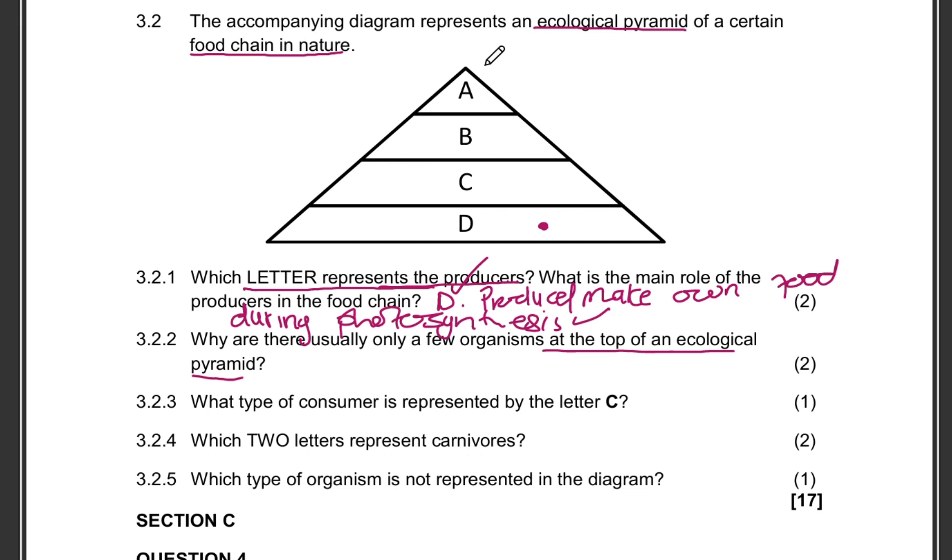In order for you to get the two marks, you would need to say the organisms in each level use most of the energy, which can be about 90% actually, use most of the energy for their own life processes. So that's one mark.